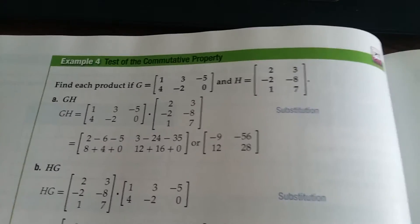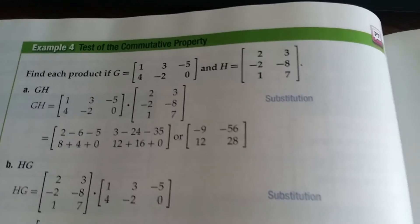Alright, we're on page 182. We're going to be looking at example 4 here, test the commutative property. So we've got to find GH and HG.